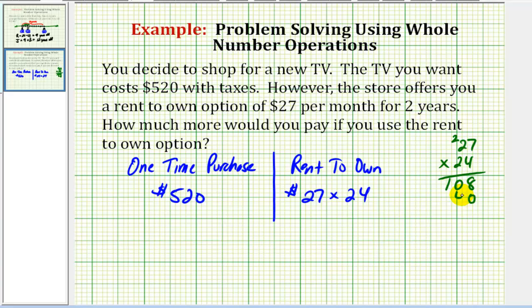Two times seven is 14. Now we'll carry a one. Two times two is four plus one, so we have five, we have eight, four, and six. So the total rent to own cost would be $648.